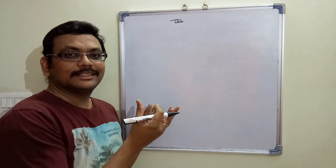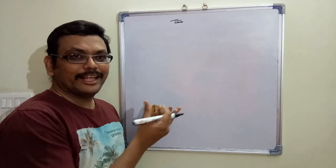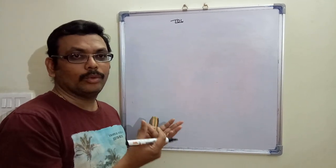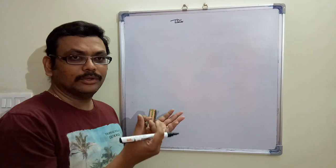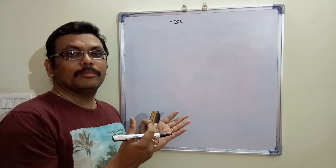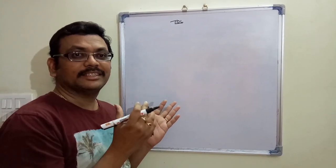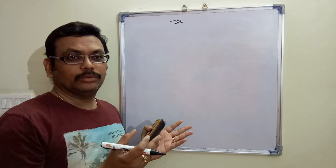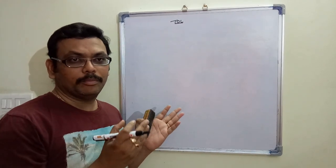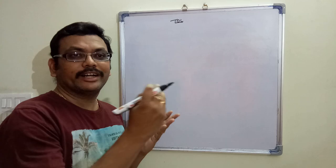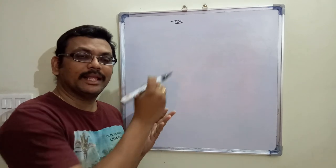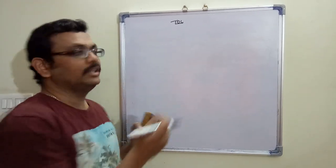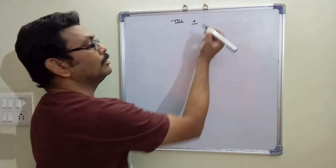Tolerance is the buffer dimension — it can be a plus or a minus value. None of a component is going to be manufactured exactly; whether by robot, manual, or machine, we can't manufacture a component exactly. So for that we need some buffer dimensions, which can be a plus or a minus dimension, and that buffer dimension is called a tolerance zone.